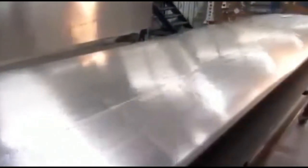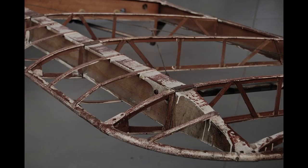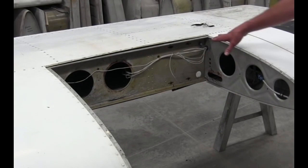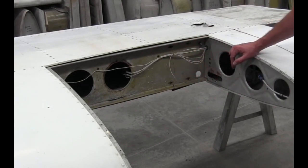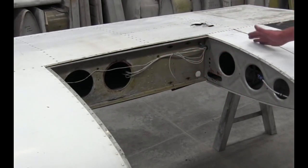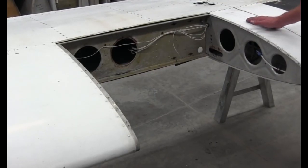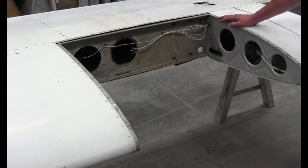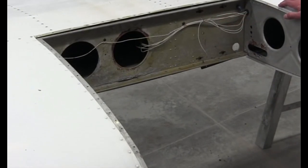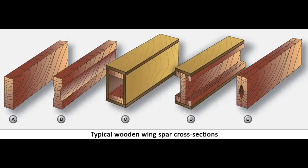Wing spars are the principal structural members of the wing. They correspond to the longerons of the fuselage, run parallel to the lateral axis of the aircraft from the fuselage toward the tip of the wing, and are usually attached to the fuselage by wing fittings, plane beams, or a truss. Spars may be made of metal, wood, or composite materials depending on the design criteria of a specific aircraft. Wooden spars are usually made from spruce.